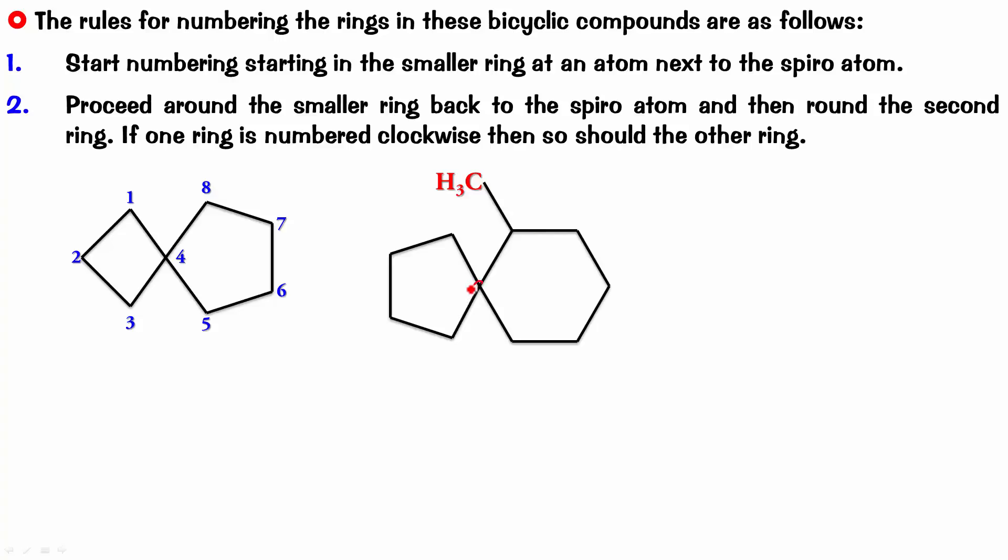This is the spiro atom. One, two, three, four, five. Since this is clockwise, six, seven, eight, nine, ten. See, I get it at six. So, the numbering is done this way.